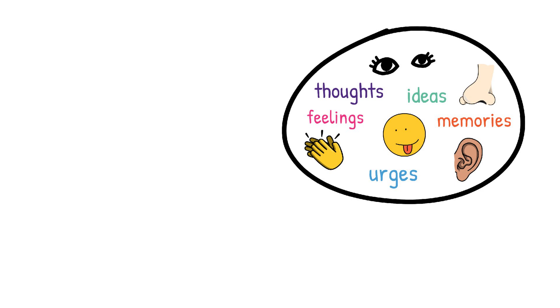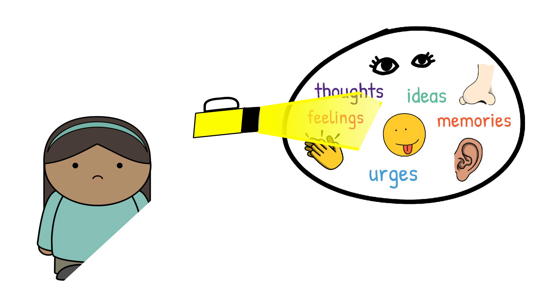Sometimes the torch shines really brightly on a part of the brain that can make us feel pretty awful. Feelings can be particularly powerful like this. Have you ever noticed when you feel really sad it's hard to think about or feel anything else?